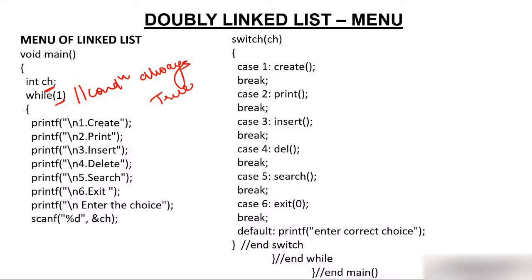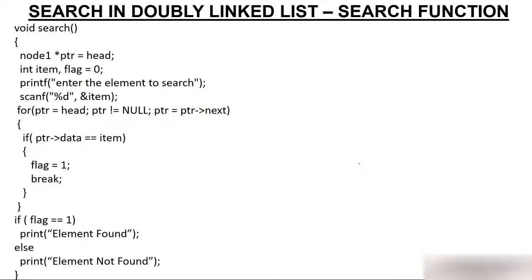Now you have plenty of options: 1 for create, 2 for print, 3 for insert, 4 for delete, 5 for search, 6 for exit. What is your choice? Since my choice is to search, I will press 5. ch will have 5, switch will have 5, and I will jump to case 5 where I am calling the search function.